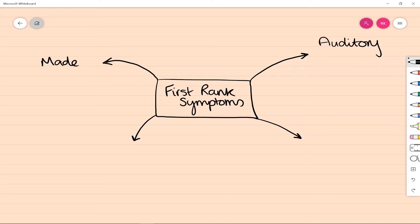Symptoms can be broken down into four categories to remember them more easily: auditory, made, thoughts, and other. There are roughly three symptoms within each category, except for other where there are two.